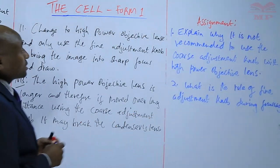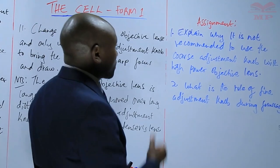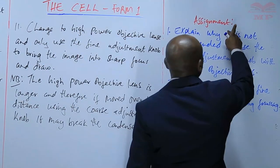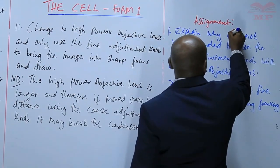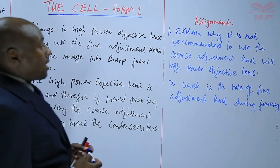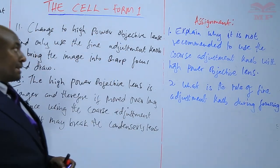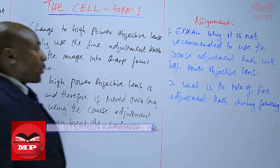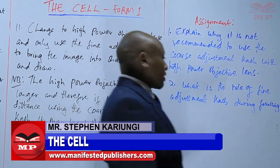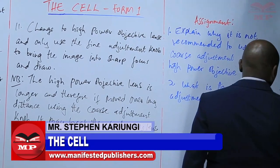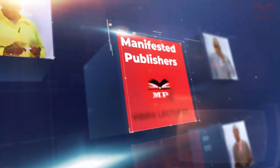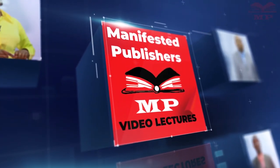We have two questions for today's assignment. Number one: explain why it is not recommended to use the coarse adjustment knob with the high power objective lens. Number two: what is the role of the fine adjustment knob during focusing? We'll stop there for today — see you next time, goodbye.